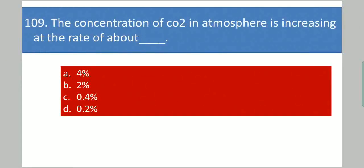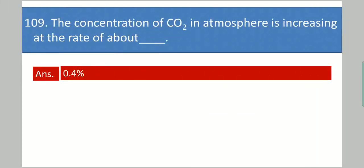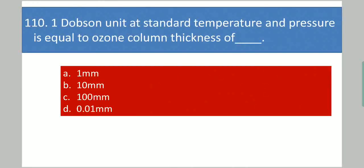Next question: The concentration of CO2 in the atmosphere is increasing at the rate of about dash. Your options are: 4%, 2%, 0.4%, 0.2%. Your answer is 0.4%.